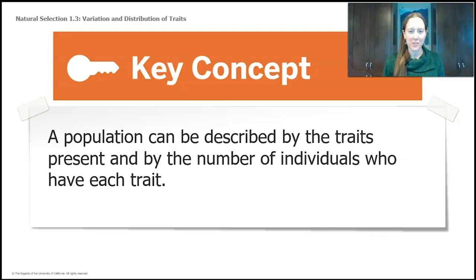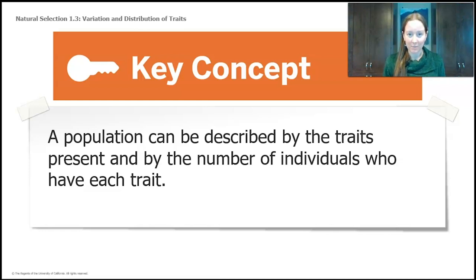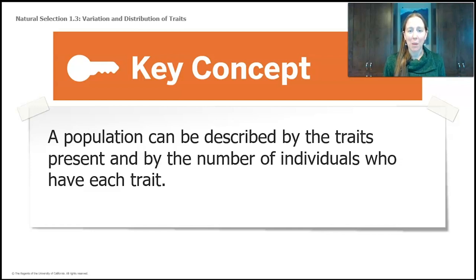We'll end today with our first key concept for natural selection: a population can be described by the traits present and by the number of individuals who have each trait. You saw this with our butterflies and the variety of traits in their wing color, with our ostrilopes and their different neck lengths, colors, and fur amounts, and with our thornpalms and carnithons. Anytime you're looking at a population, you're looking at what traits they have and how many have each of those traits.